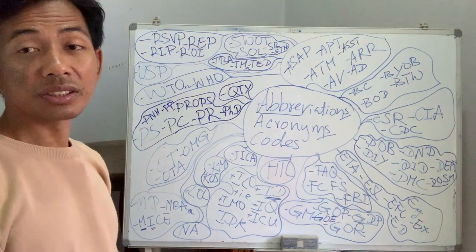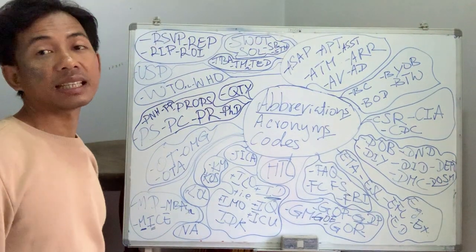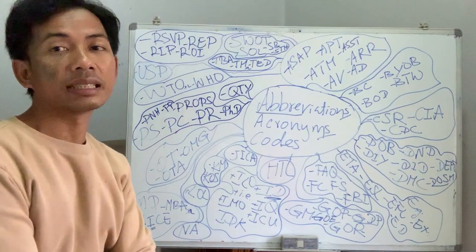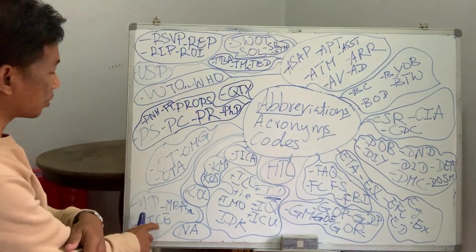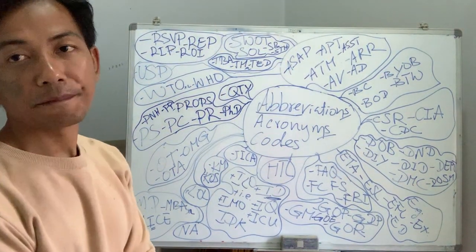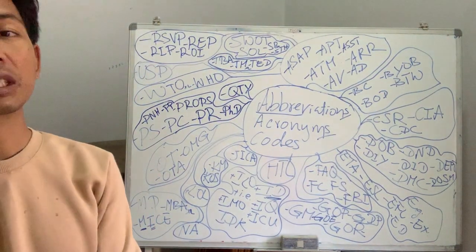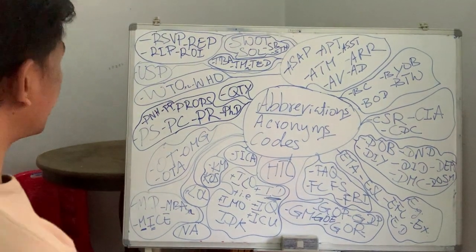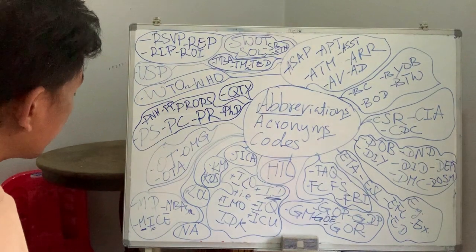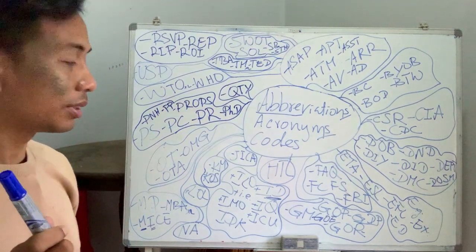Congress is a very big meeting or conference — not really common here but in Europe and other developed countries they have a lot of Congress, like the government. Exhibition — we have it here but most travel companies don't do it; mainly events companies do exhibitions because it's a bit complicated.